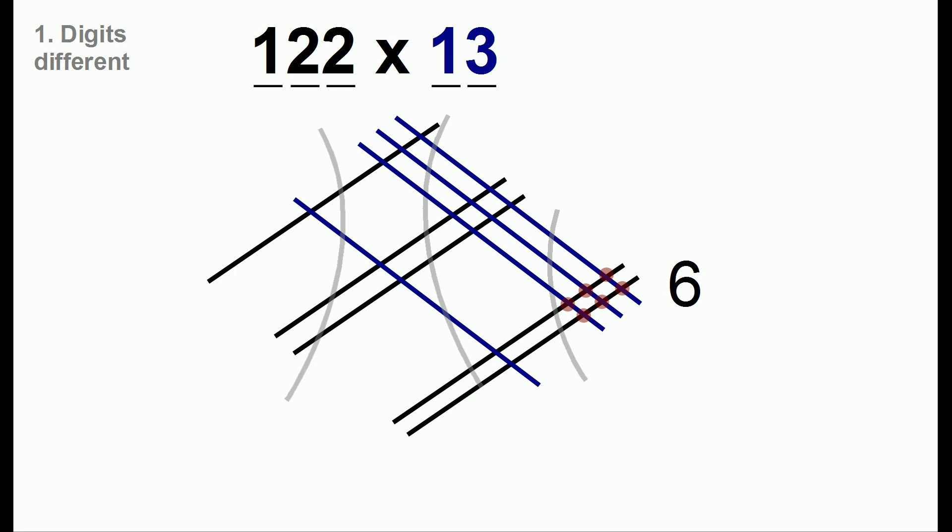Now we make our groupings and we'll just count as normal. There are six lines, six dots here, eight dots, in the middle there's five, and one dot. So you can do multiplications where the digits are different. Just remember to align the second number starting all the way on the right.